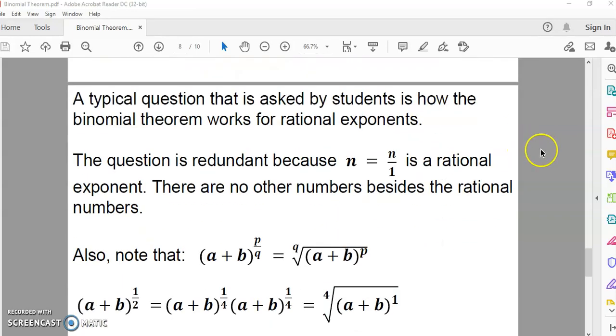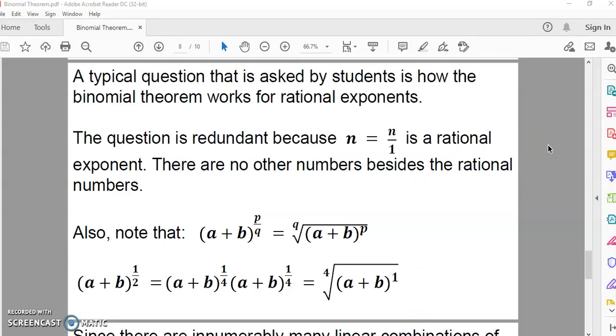And now, the next question is asked by students, and it's really a redundant question, is how does a theorem apply to rational exponents? Well, isn't N a rational number? It is. N is a rational number whose consequent part is the unit. So N is a multiple of the unit. So, it's a rational number. And, of course, there are no other numbers besides the rational numbers.